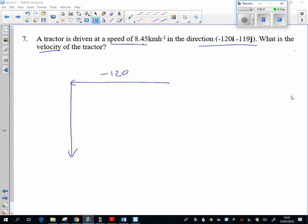And then that's the velocity vector there. So if the velocity was minus 120, minus 119, let's have a think about what the speed would be.